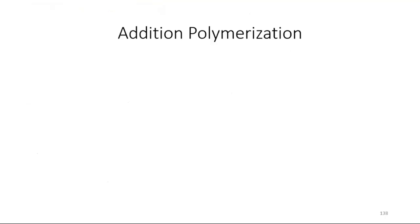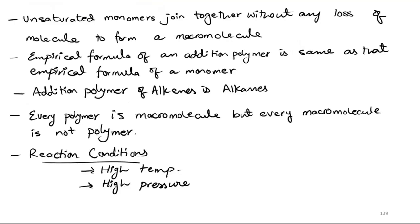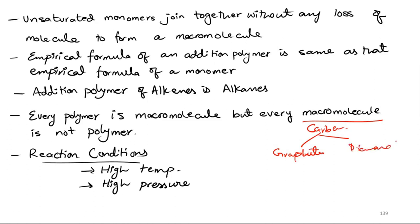This is addition polymerization. What happens is that unsaturated monomers are joined together without any loss of molecules to form a macromolecule. The empirical formula of an addition polymer is the same as that of a monomer. Every polymer is a macromolecule, but every macromolecule is not a polymer — for example, graphite and diamond are macromolecules but are not polymers.